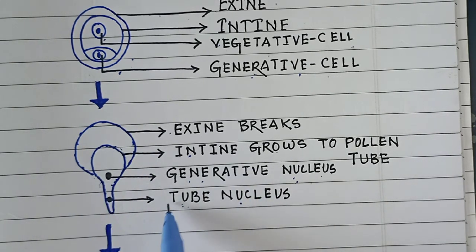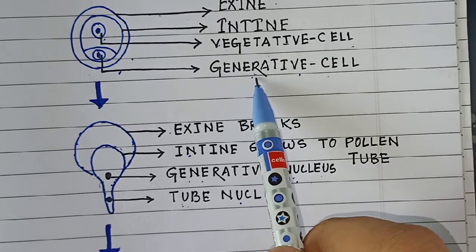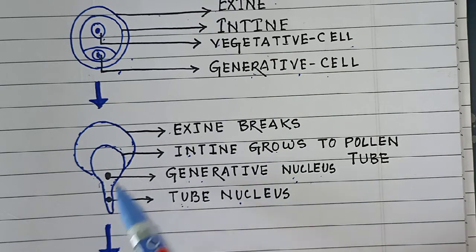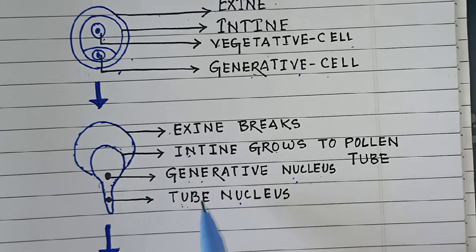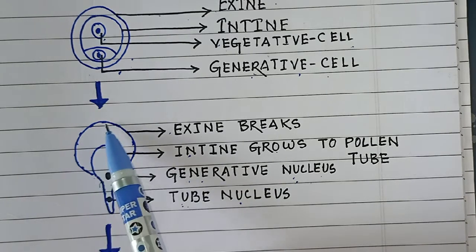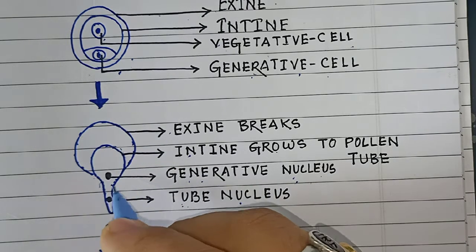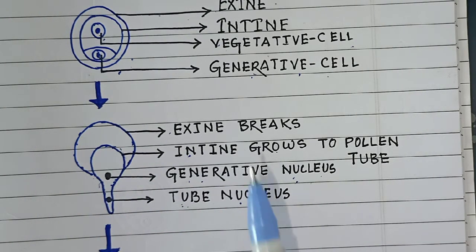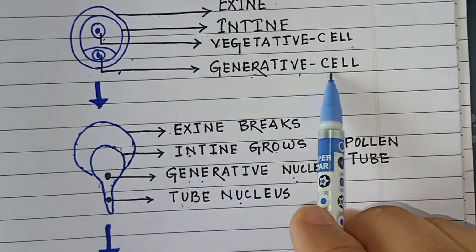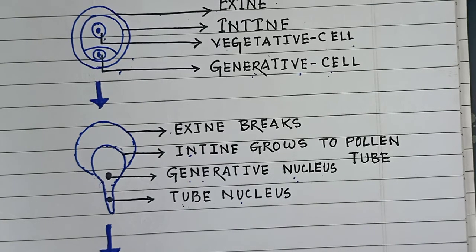When the intine region grows to form the pollen tube, both the vegetative cell and the generative cell enter into the pollen tube. Once inside, they transform themselves into the generative nucleus and the tube nucleus.